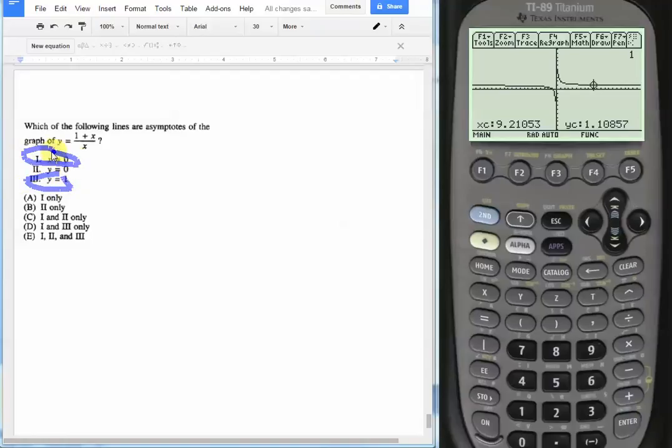So the answers are roman numeral one, which is x equals zero, and roman numeral three, which is y equals one. That would be choice D as our correct answer.